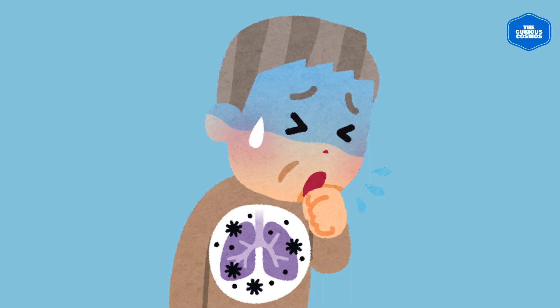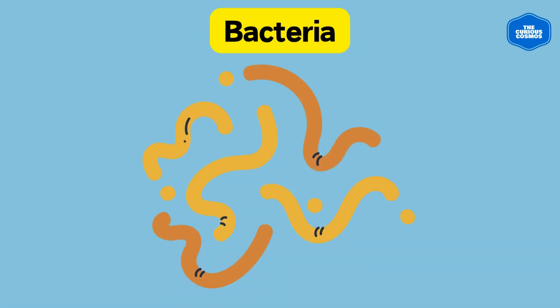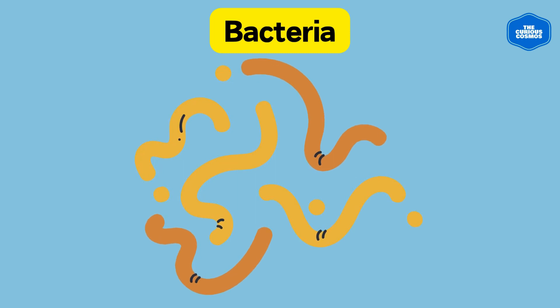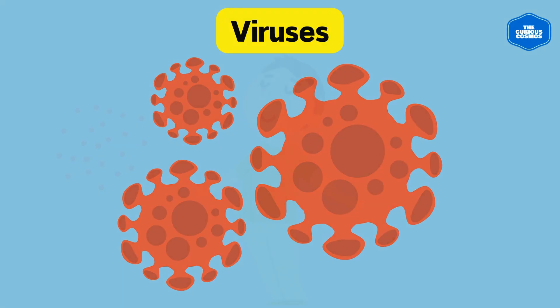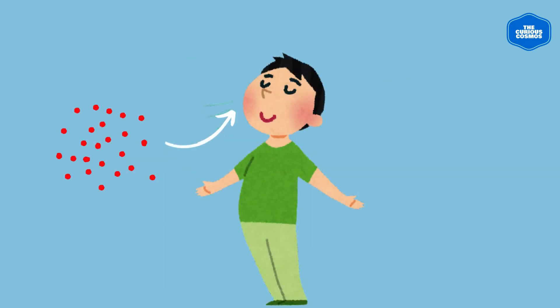Pneumonia is a lung infection that can range from mild to quite serious, so understanding what it is and how it happens is crucial. There are different kinds of pathogens that can cause pneumonia — the most common ones are bacteria and viruses.